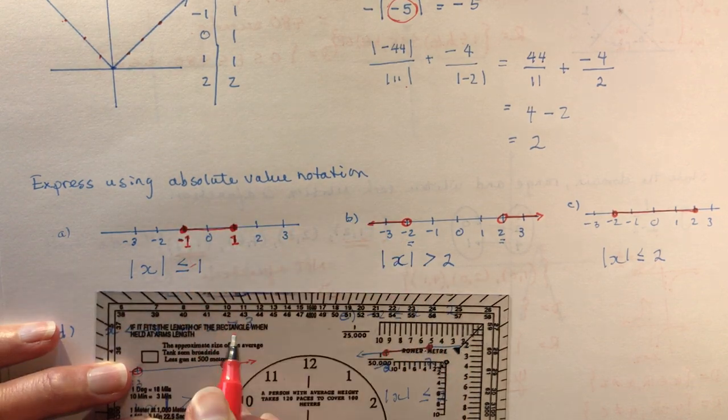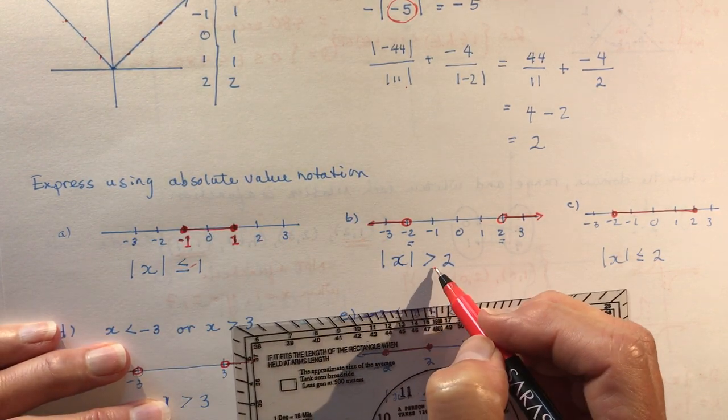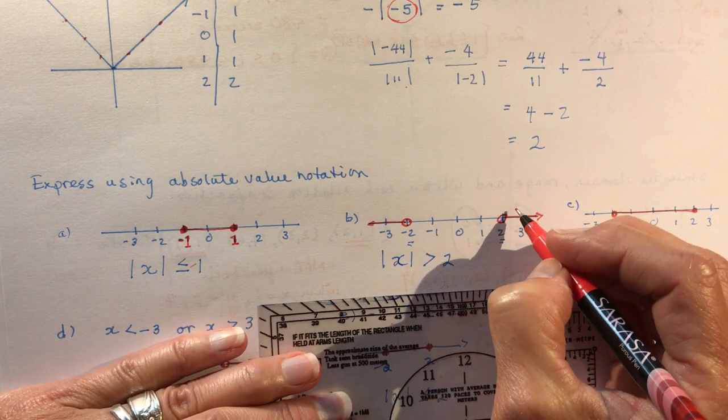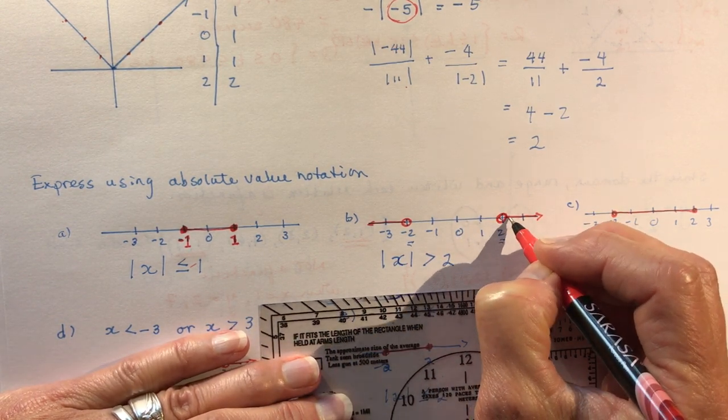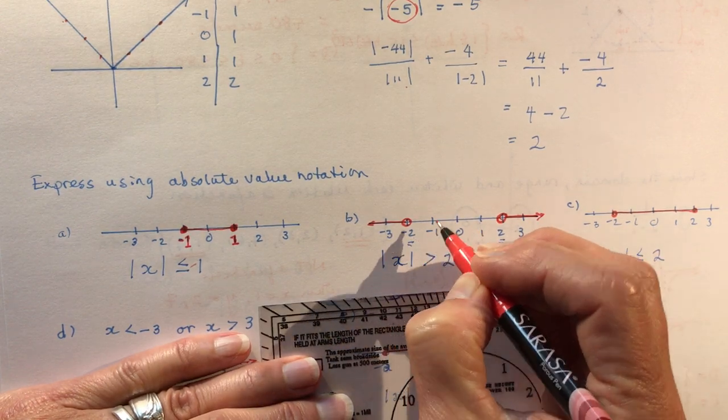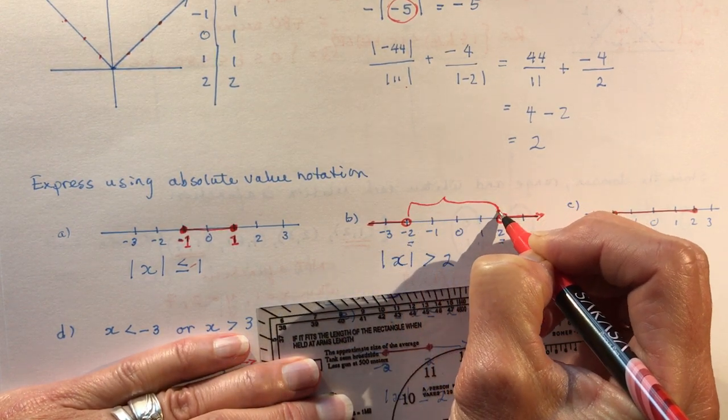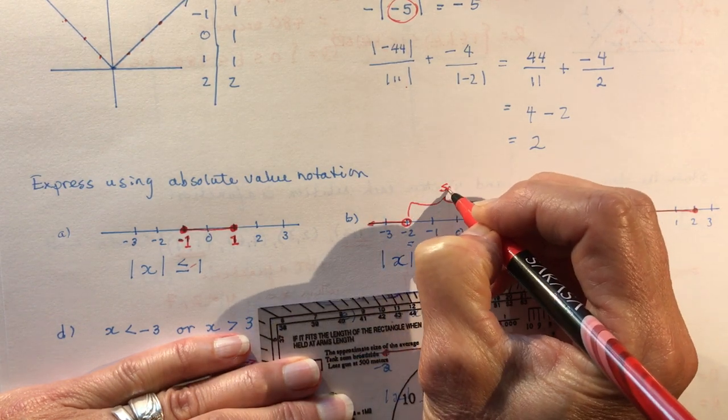If they're open, it's an inequality like this, greater than two, no equal sign. So this one we start here and we go this way. It's the same distance. You have to check to make sure these are the same distance apart.